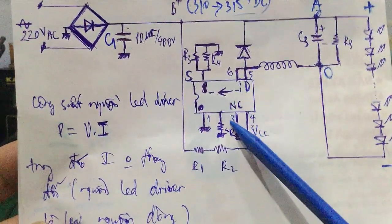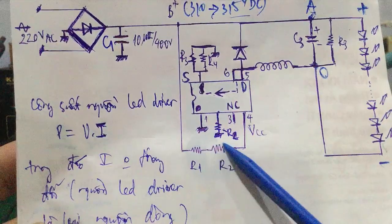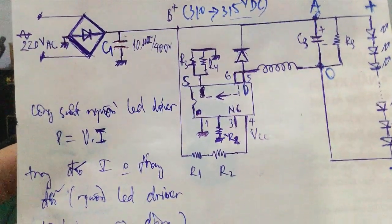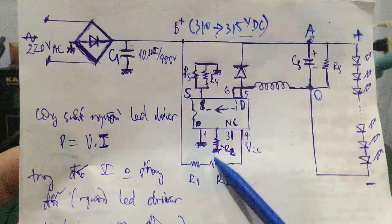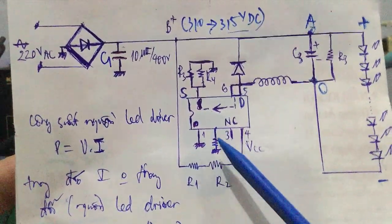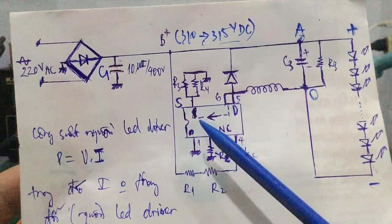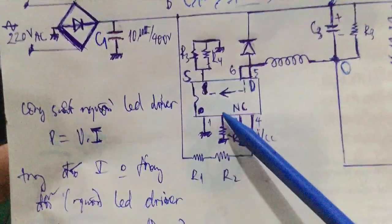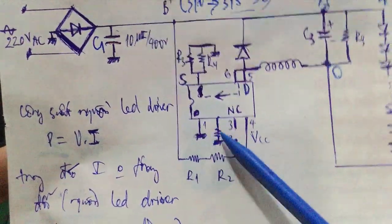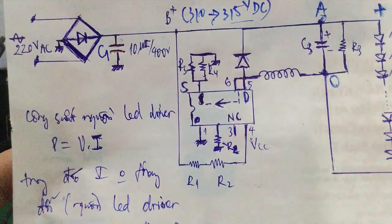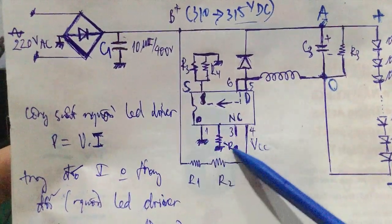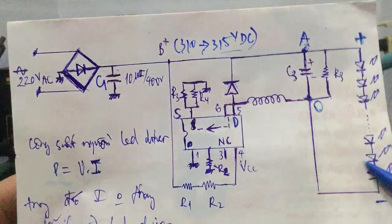Cách thứ hai là thay đổi giá trị R2. Một số mạch sẽ có con R2 mắc thêm một con điện trở, còn một số mạch thì bỏ không kết nối, hoặc nối mát luôn. Thay đổi giá trị R2 sẽ thay đổi được điện áp ngõ ra.